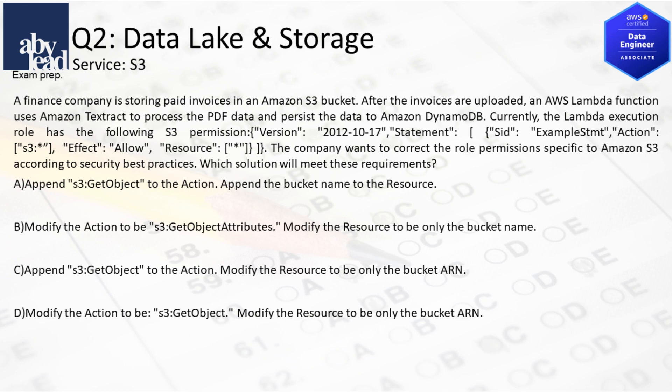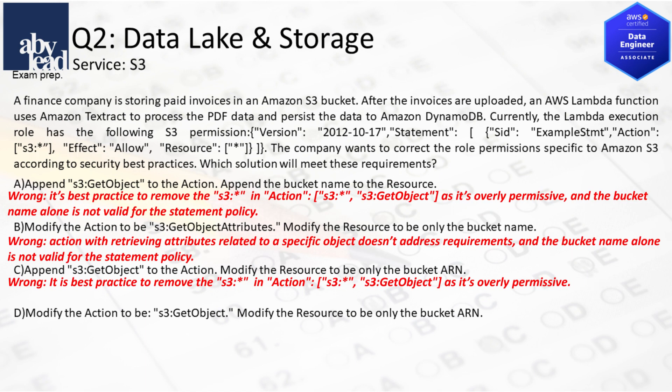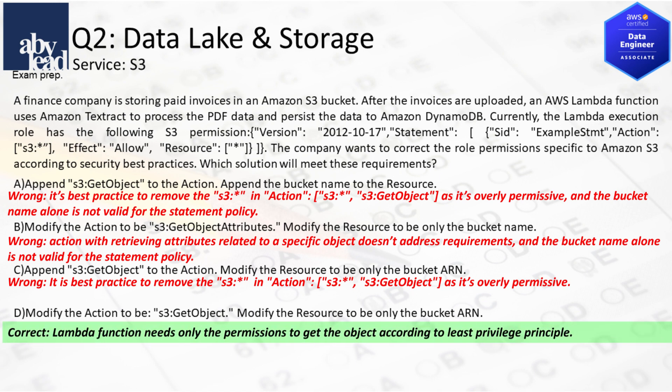Question 2: How do you correct Lambda's S3 role permissions with an S3 GetObject action? Don't apply an overly permissive S3 action and don't use a bucket name reference. Using a retrieval attribute is not better either. You should use Lambda function permissions to get the object according to the least privilege principle.